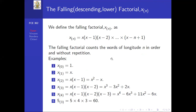We also have the rising factorial (Pochhammer factorial), defined as x times (x+1) times (x+2) times ... times (x+n-1). Examples: n=0 gives 1; n=1 gives x; n=2 gives x(x+1) = x²+x; n=3 gives x³+3x²+2x; n=4 gives x⁴+6x³+11x²+6x. For example, when x=2 and n=4, the rising factorial gives 2 times 3 times 4 times 5 = 24.